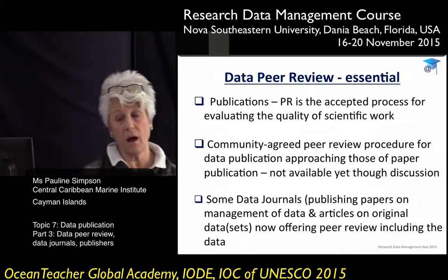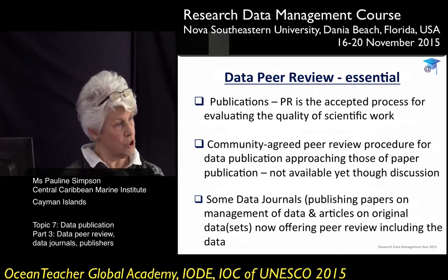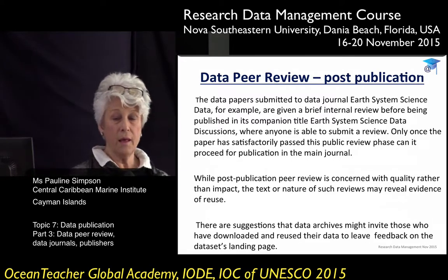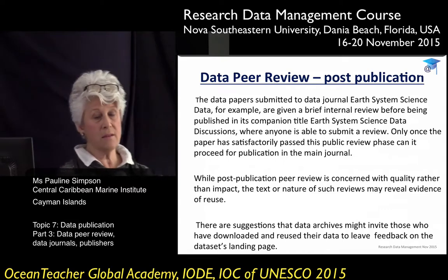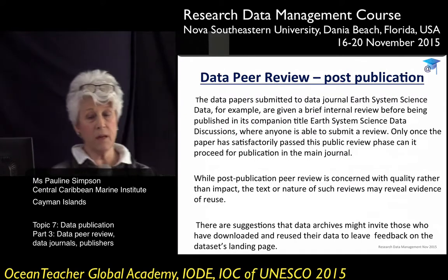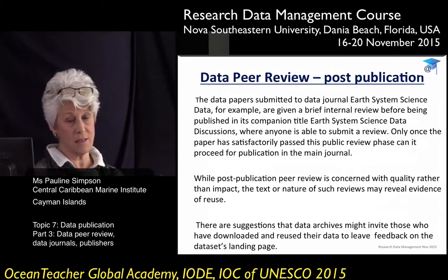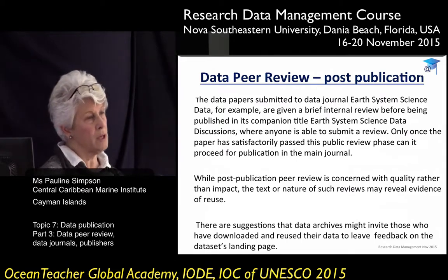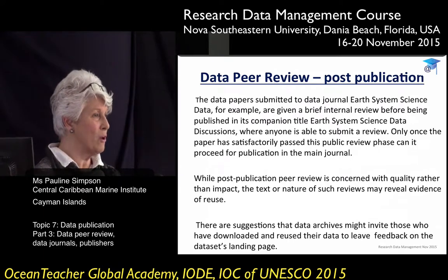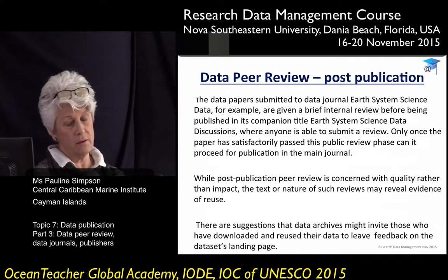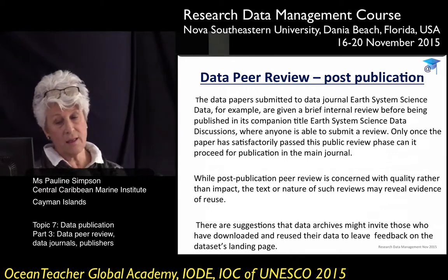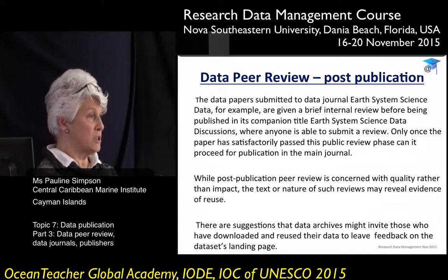Some of the data journals — those that publish papers on management of data and articles on original data sets — are now offering a form of peer review which does include the data. One of them is Earth System Science Data. They take in the data set and make it available through a companion title called Earth System Science Data Discussions, where they put it up for public review — for your peers to look at and give their review on that actual data set or data article. If it is satisfactory and passes that public review phase, they put it into the main journal.